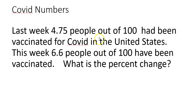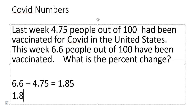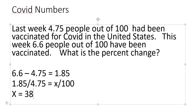Last week, 4.75 out of 100 people had been vaccinated for COVID in the United States. This week, 6.6 out of 100 have been vaccinated. What is the percent change? 6.6 minus 4.75 gives me 1.85. Then 1.85 over last week's number, 4.75, equals X over 100. 1.85 divided by 4.75 times 100 gives me 38.9%. That doesn't mean 38.9% of the population is vaccinated — it means there's a 38.9% increase in how many people have been vaccinated.